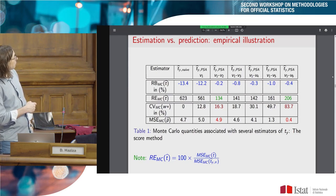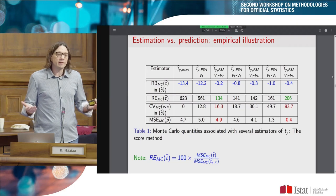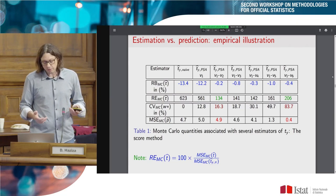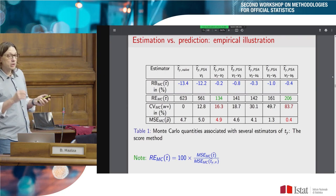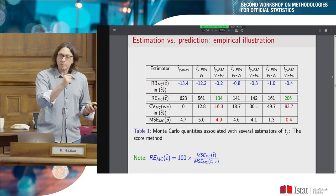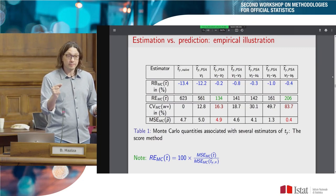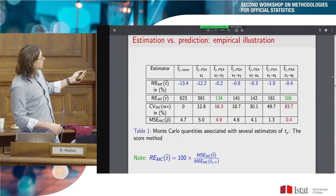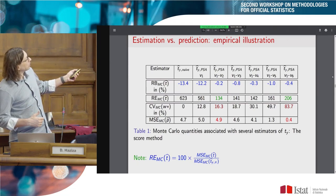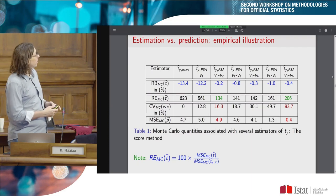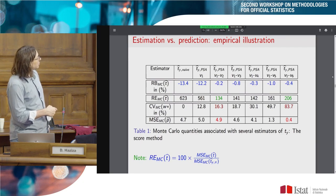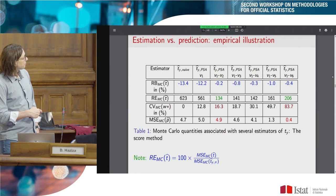The naive estimator has Monte Carlo percent relative bias of minus 13%. Using only V1 in the model, we go from minus 13 to minus 12. Adding V2, we go from minus 12 to zero — the bias is totally eliminated. Adding V3, V4, V5, V6 doesn't reduce bias further, but looking at relative efficiency — the ratio of MSE of the estimator to the complete data estimate — we have 134, then 141, 142, 161, 206 as we include more variables. The estimator gets worse and worse.